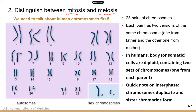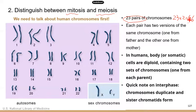Most of the questions on TEAS about mitosis and meiosis will probably be based on human genetics, so I'm going to use the human number of chromosomes as an example as we go over mitosis and meiosis. You need to know that humans have 23 pairs of chromosomes, for a total of 46 chromosomes. That's the unique number of chromosomes for humans.